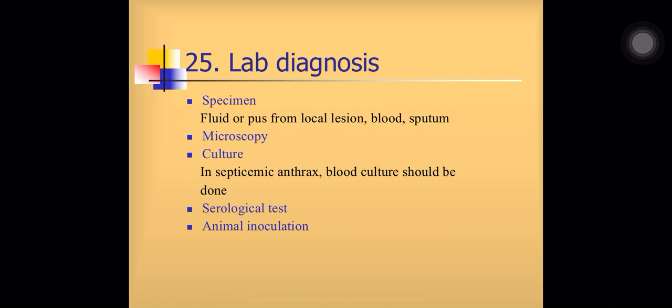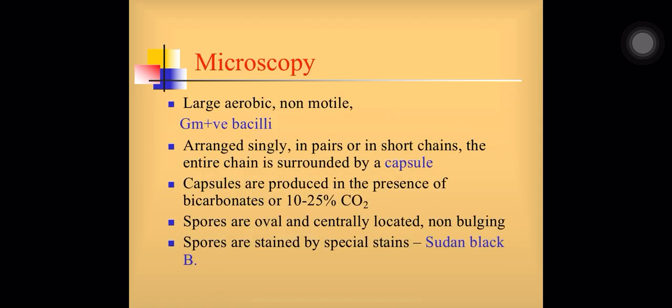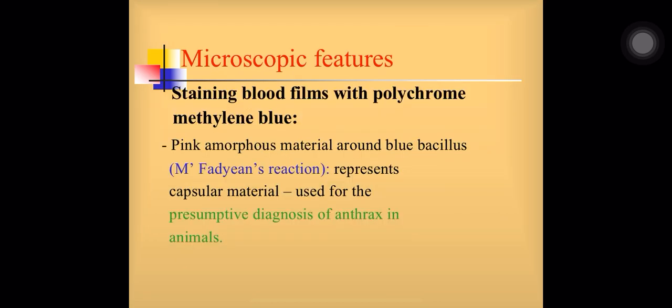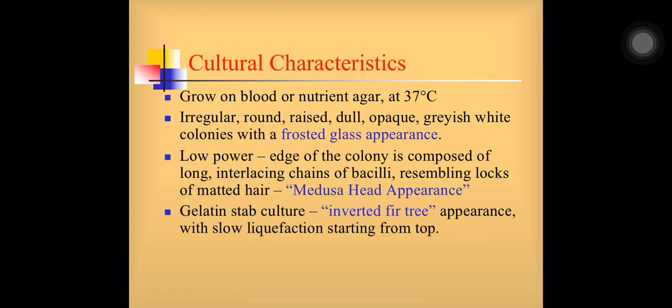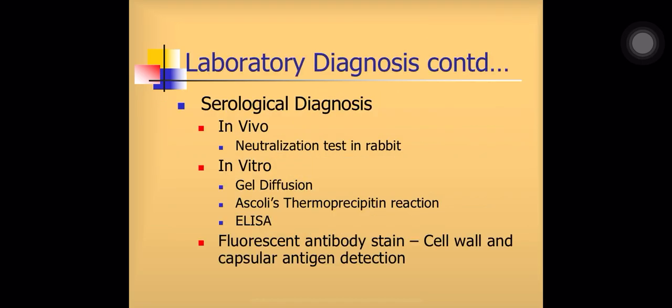Microscopy can demonstrate the McFadyen reaction. Spores can be stained by special Sudan black B stain. In culture, various properties like inverted fir tree appearance, medusa head appearance, and frosted glass appearance can be demonstrated. McFadyen reaction can be done for demonstration of the capsule. In serology, Ascoli's thermoprecipitin test is an in vitro diagnostic serological test useful for this condition; ELISA and gel diffusion can also be used. An experimental animal neutralization test in rabbits can be performed. For animal inoculation, guinea pig or mice can be used.